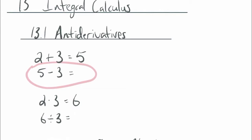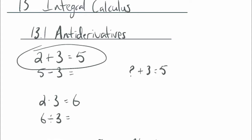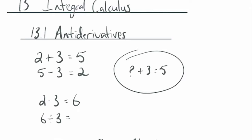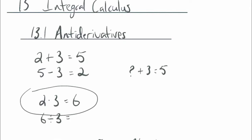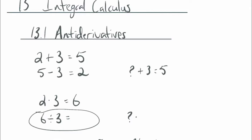So you learn about 5 minus 3. The way it's typically explained is: what do you add with 3 to get 5? Something plus 3 makes 5. And because you've memorized your addition tables, you think, oh, 2 plus 3 is 5, so the answer is 2. 5 minus 3 is 2. It's because you're thinking about addition backwards. Then you learn multiplication: 2 times 3 is 6. And then division: 6 divided by 3. You solve that as something times 3 equals 6 — 2 times 3 is 6, so 6 divided by 3 is 2. You're thinking backwards through something you've done.